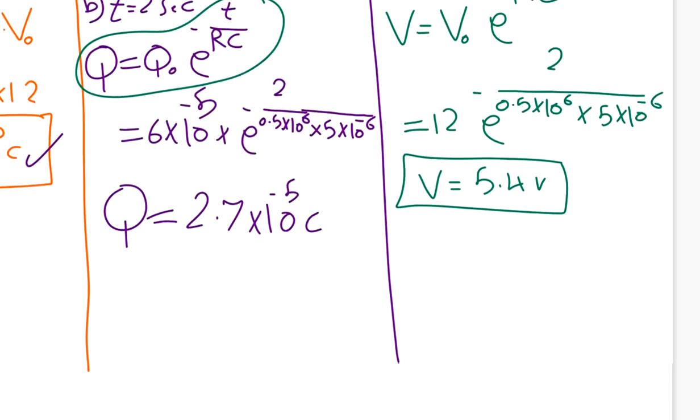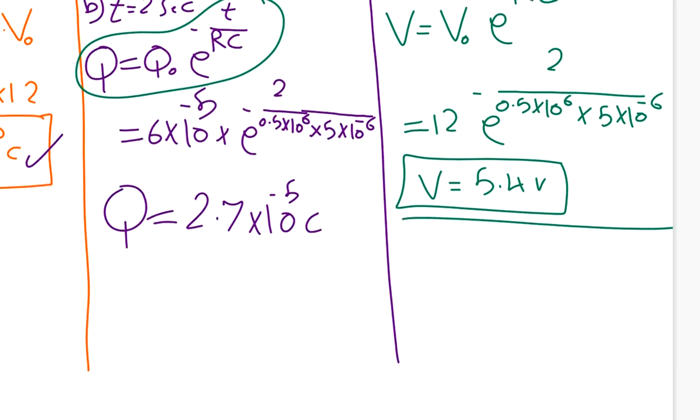Another method of finding the voltage: I can say that V equals Q over C. Which Q? It's the Q after 2 seconds. So it is 2.7 times 10 to the power negative 5 over the C, which is 5 times 10 to the power negative 6.